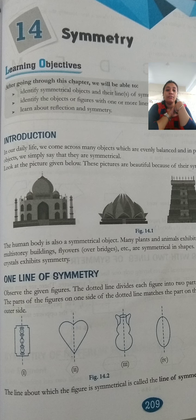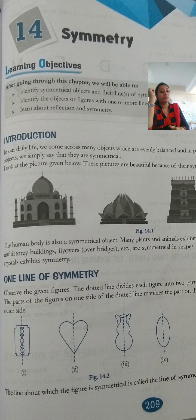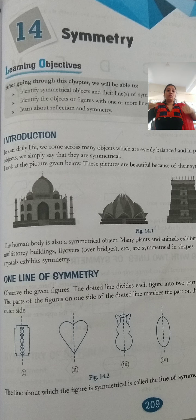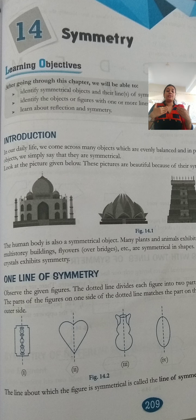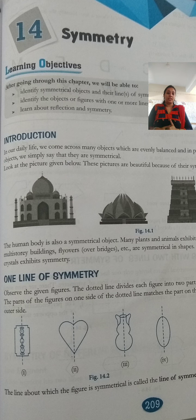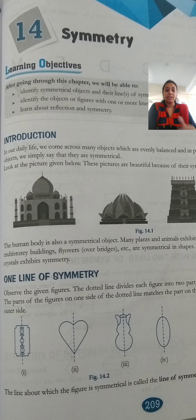There are many figures which have only one line of symmetry. For example, your body - if you cut it horizontally through the middle, the upper body is separate and the lower body is separate, and they are not equal. So the line of symmetry cannot be horizontal, only vertical. In our body, there is only one line of symmetry. Similarly, in the Taj Mahal, there is no horizontal symmetry, only vertical symmetry.